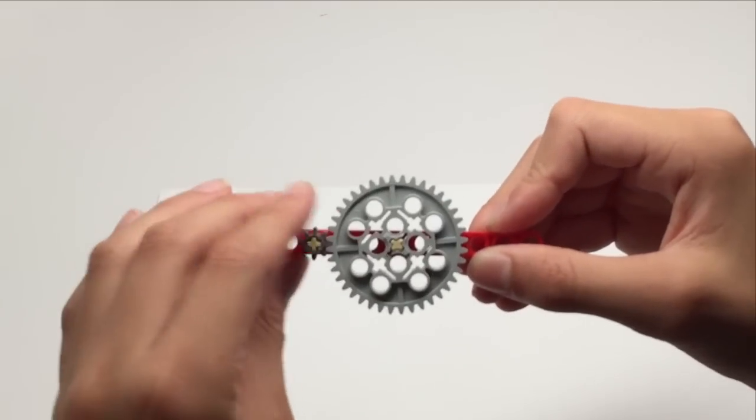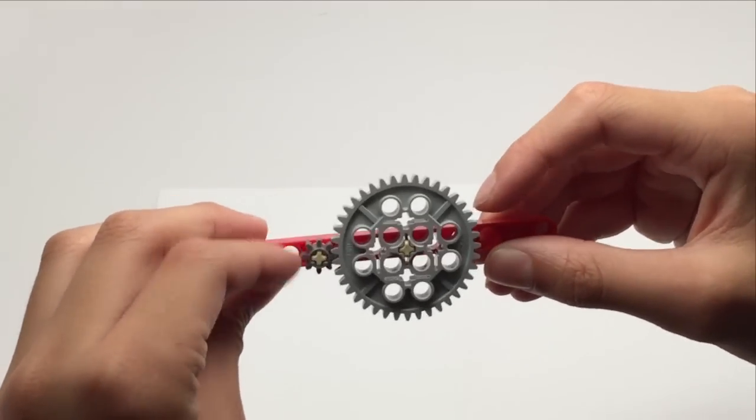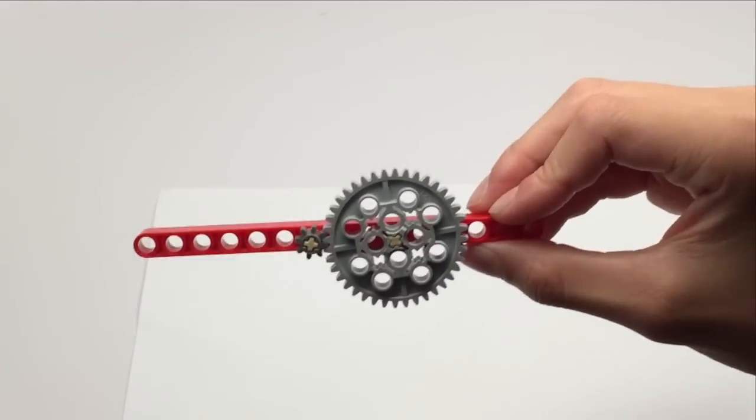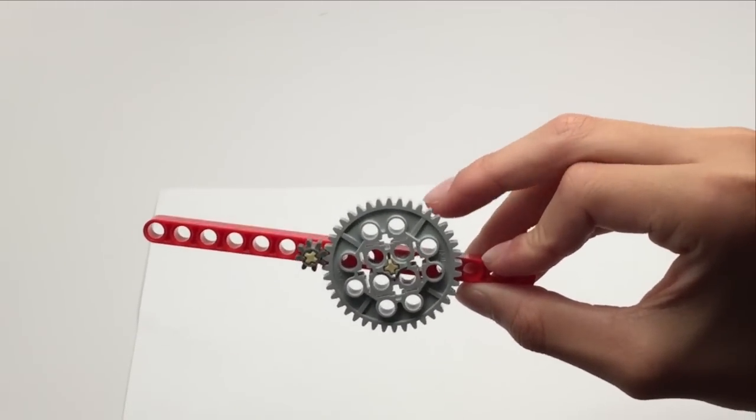If you notice, you have to spin the small gear many many times for the big gear to spin once. And similarly, you have to just spin the big gear a little bit for the small gear to spin a lot.